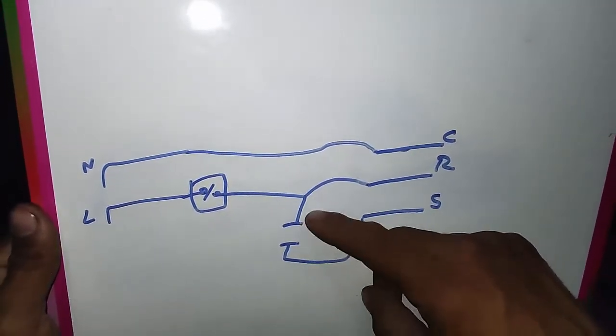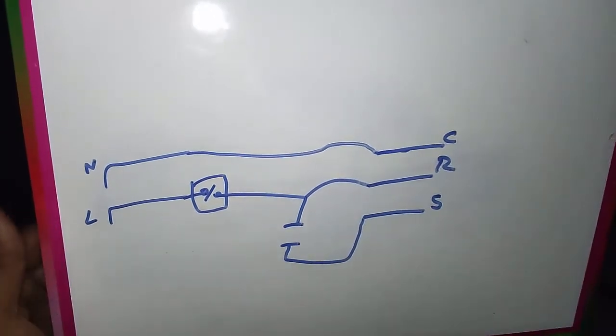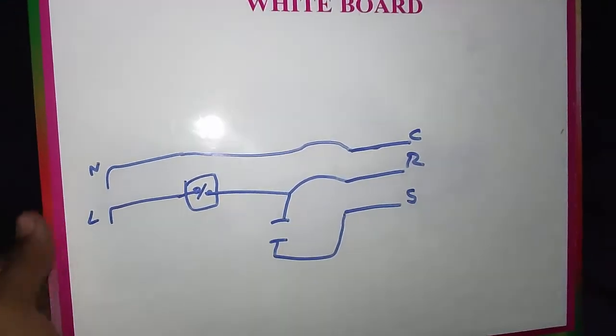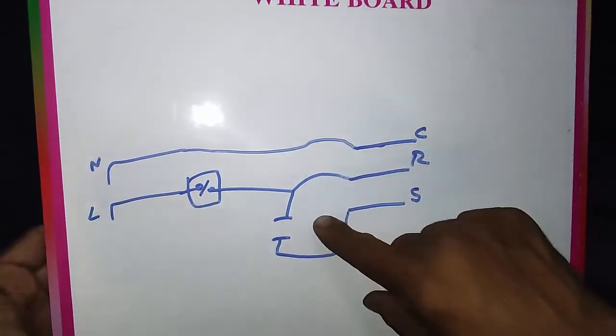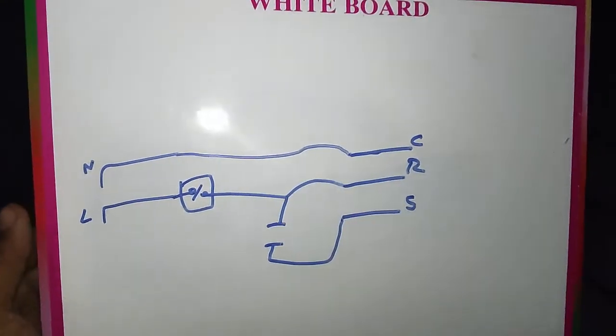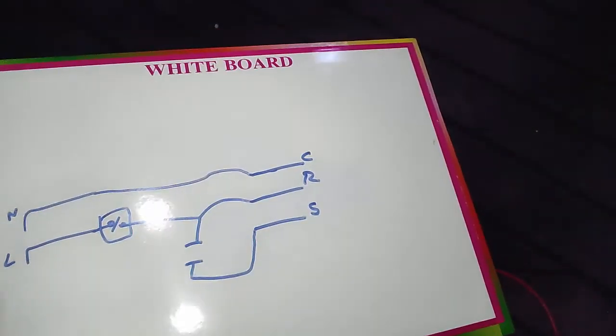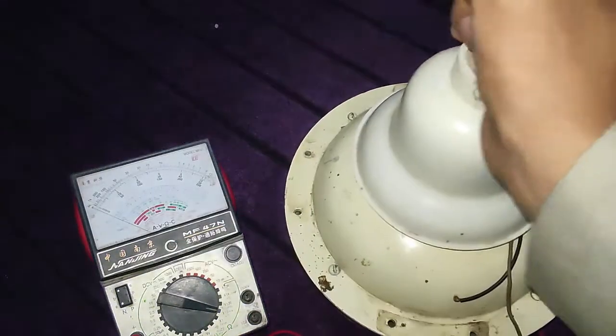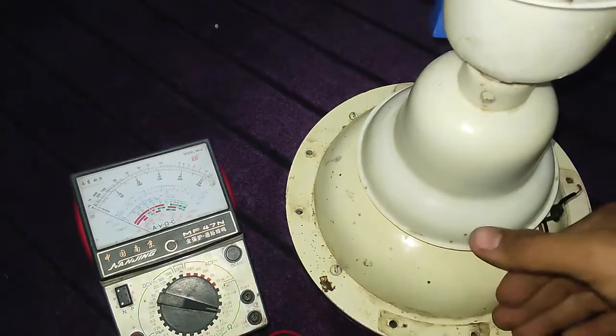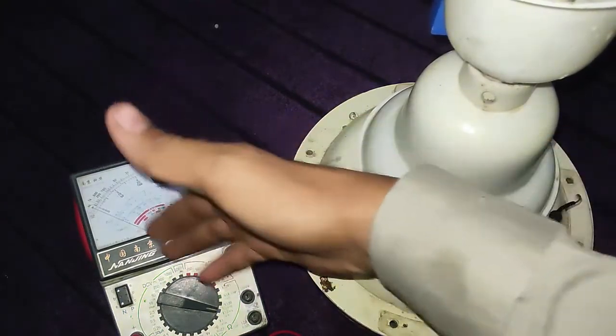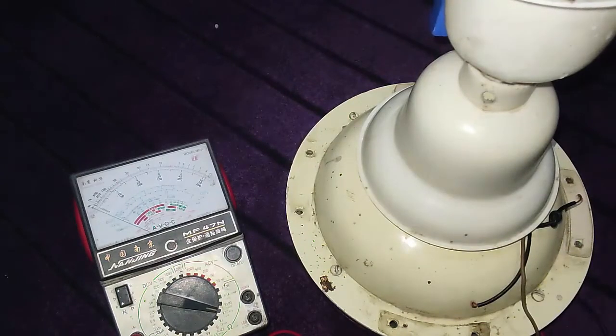A capacitor is connected between the run and start terminal. Simple wiring connection, simple capacitor connection, and it's so easy to find out start, run, and common in a ceiling fan or induction motor or in a compressor. That's all. If you have any questions according to this video or this method, you can ask in the below comment section. Thanks for watching, stay tuned with us and subscribe to our YouTube channel. Bye.